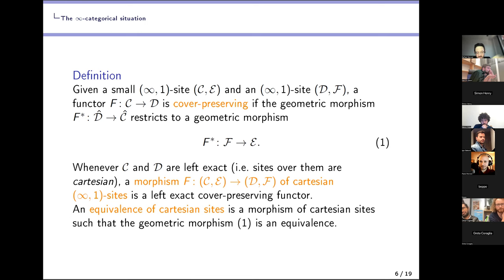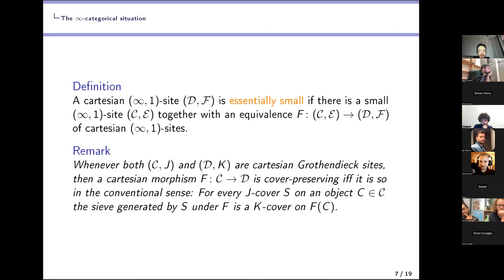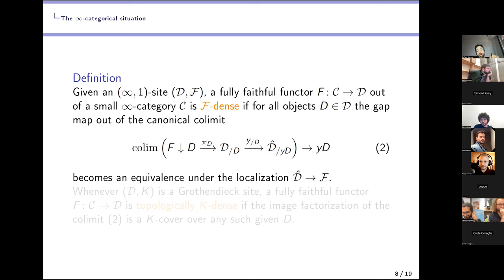To relate this back to 1-topos theory: whenever both (C, J) and (D, K) are Grothendieck sites, a cartesian morphism from C to D is cover-preserving in our sense if and only if it is so in the conventional sense — meaning every J-cover on an object c maps to a K-cover on fc. The cartesian assumption is important: one direction holds always, but the other direction may not hold without it.